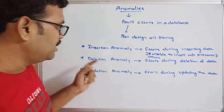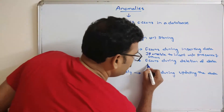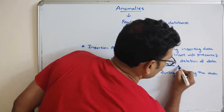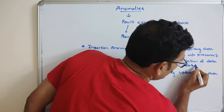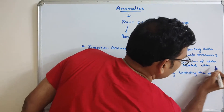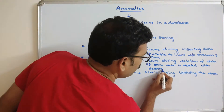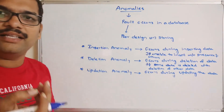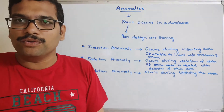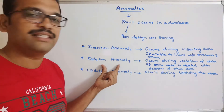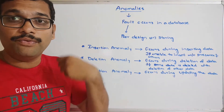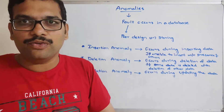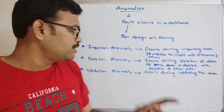Coming to deletion anomaly: if some data is deleted along with the deletion of other data — that means if you are supposed to delete some data in the table which also causes deletion of another attribute's data — that type of anomaly is called a deletion anomaly.